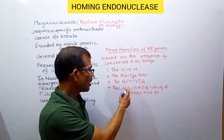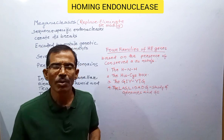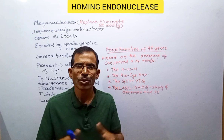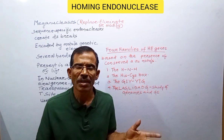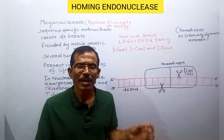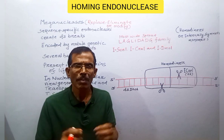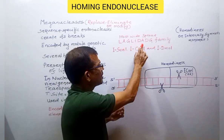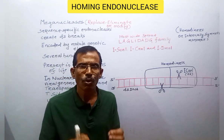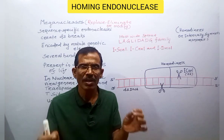Out of these four, the LAGLIDADG family is the most prominent, found in the chloroplasts and mitochondria of unicellular eukaryotic organisms.